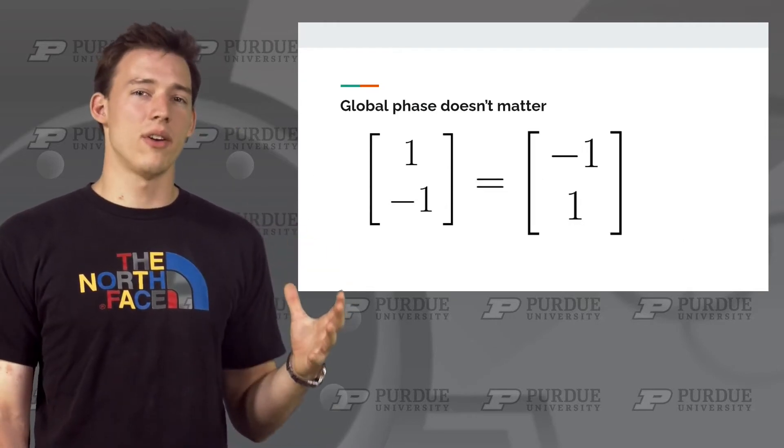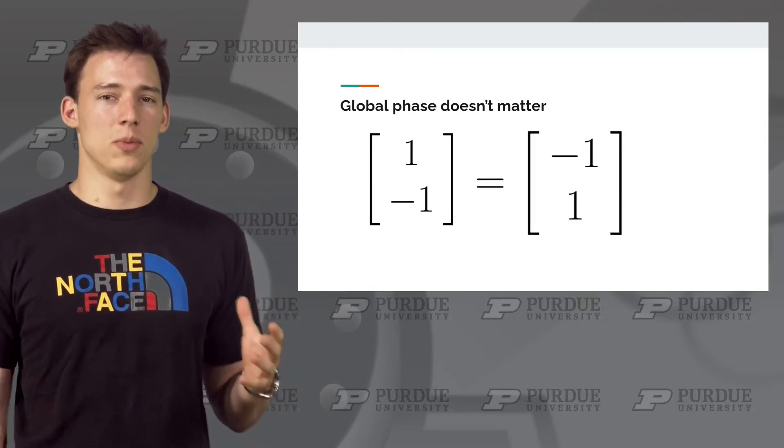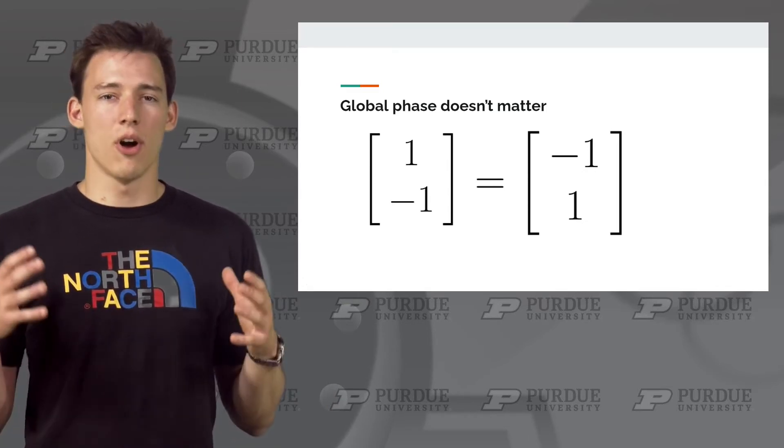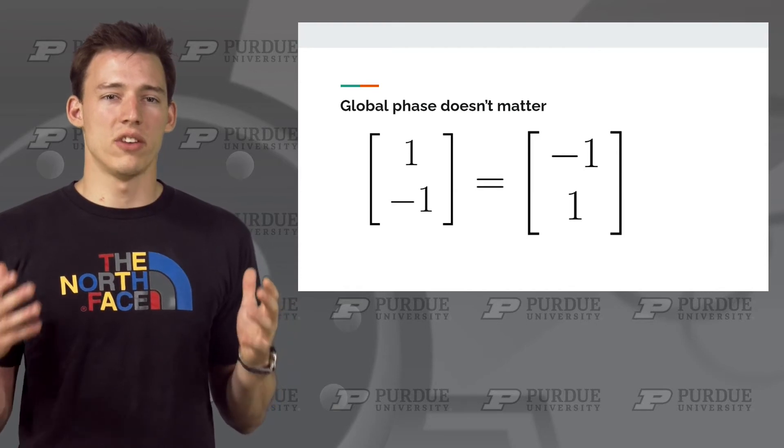This negative 1 not only doesn't affect measurement, it is actually not possible to build any circuit which could distinguish these two states. So for all intents and purposes, these states are the same.